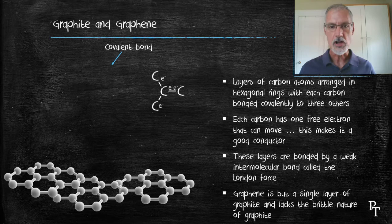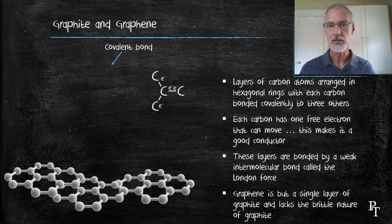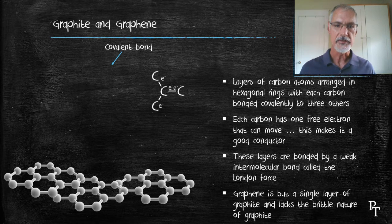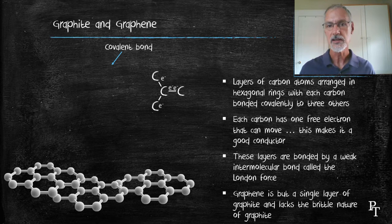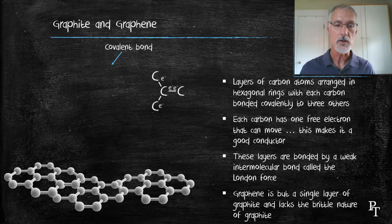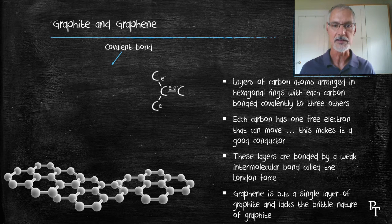If these sheets are all joined together, we form what's called graphene, a single monolayer of carbon. This substance doesn't have the London dispersion force as it's just one sheet, and as a result, it doesn't share that property with graphite. It's not brittle, but rather quite flexible. Otherwise, it does share the similar properties of conductivity.